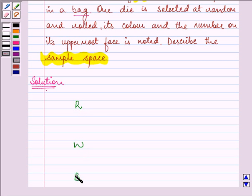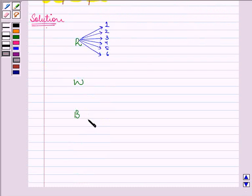Now, one die is selected and then rolled. Its color and number on its uppermost face is noted. We know that each die has six options. We can obtain any number from one, two, three, four, five, or six. The same is true for the white and red die as well.